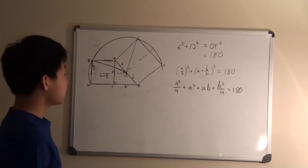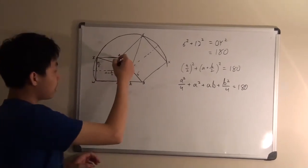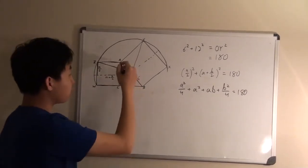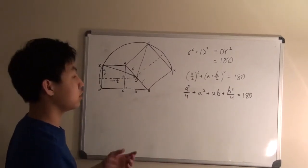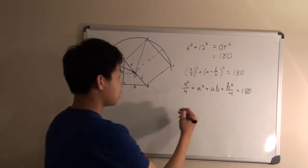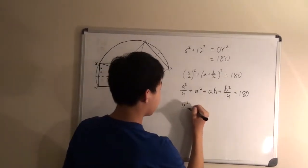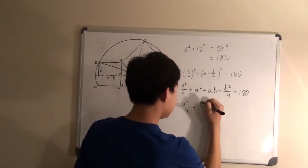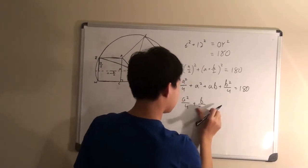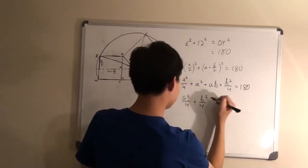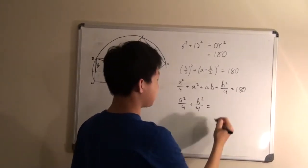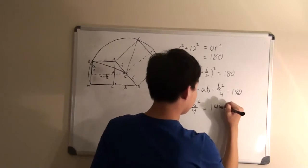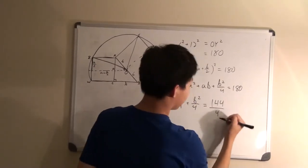And since we know that A squared plus B squared would also equal to the hypotenuse squared, which is 12, that would mean it would be 144. And since we have A squared over 4 and B squared over 4 here, we can also simplify this by making it 144 over 4.